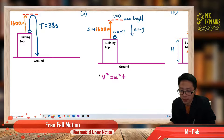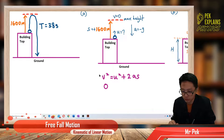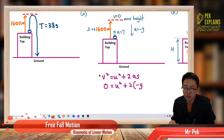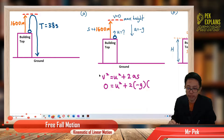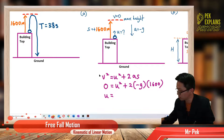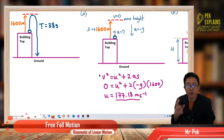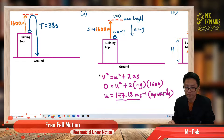Using v² = u² + 2as: the final velocity v is zero, acceleration a is negative g (gravity acting downward), and displacement s is 1600 meters. After calculating, we get the initial velocity u equal to 177.18 meters per second. The velocity is positive because it is acting upwards.